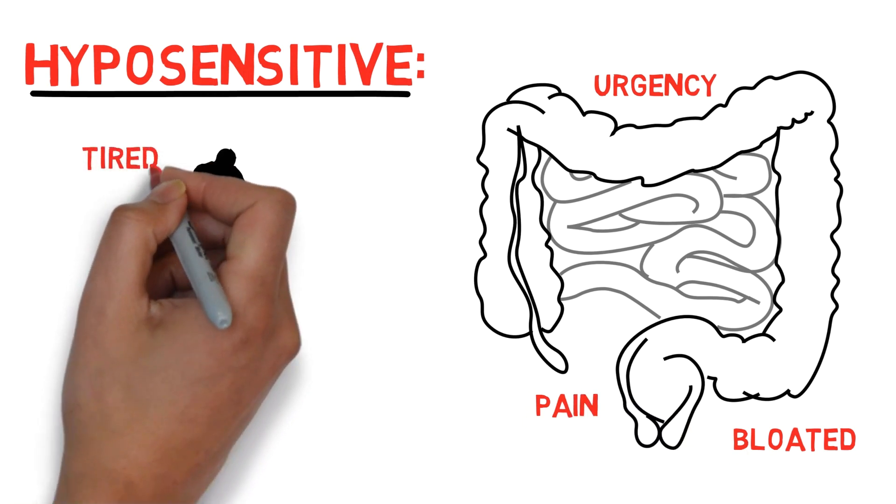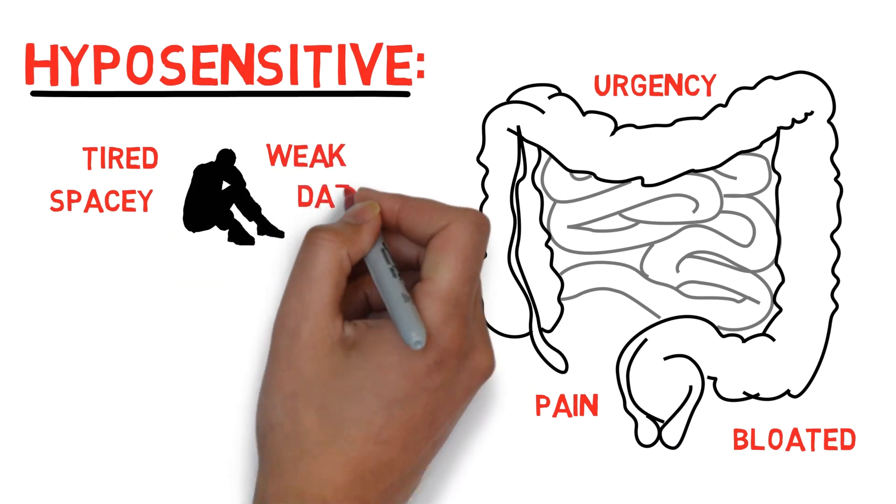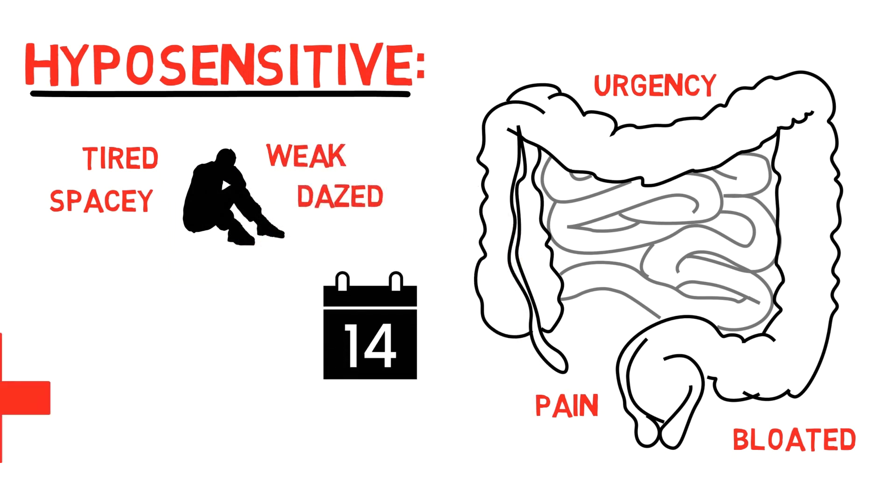You might not notice when you need to sleep so thus feel tired and spacey, or when you need to eat so therefore feel weak and dazed. You might not notice things like periods or when you're ill, and bodily sensations could get confused with emotions.